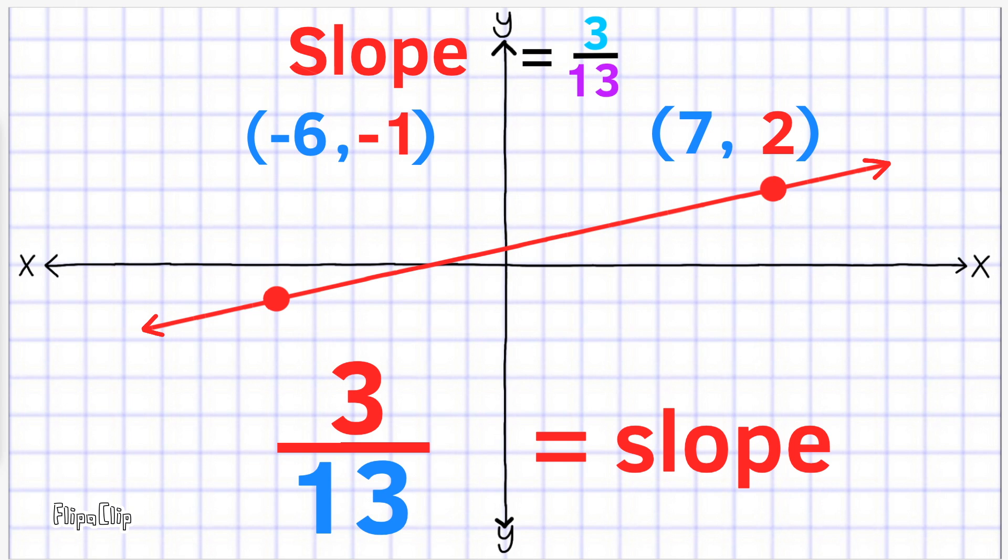So the slope is 3 over 13. That simply means that the vertical rise is 3 units up and the horizontal run is 13 units to the right.